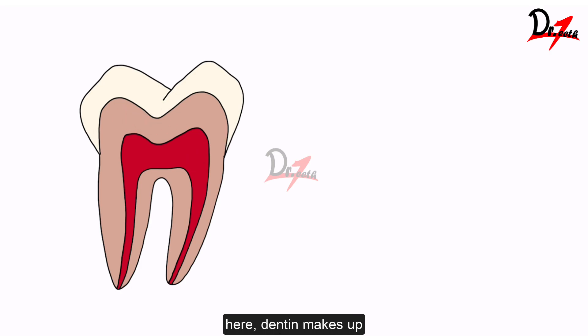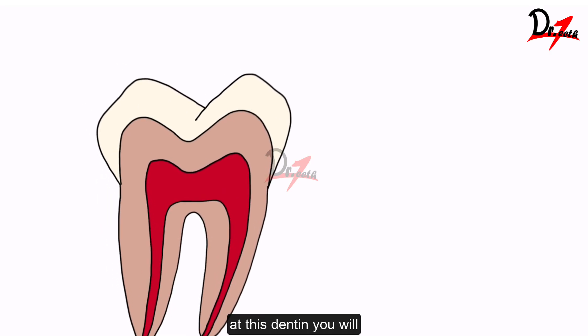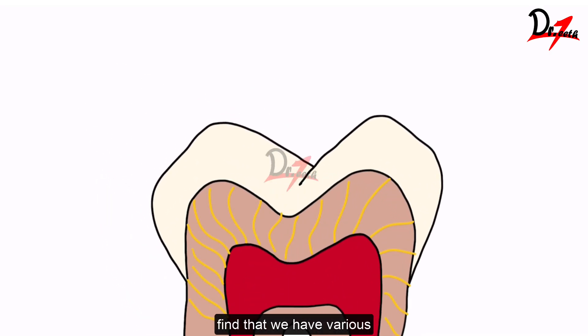As you can see here, dentine makes up the bulk of the tooth and if you look closely at this dentine, you will find that we have various tubules in the dentine. These are the dentinal tubules and it is present all throughout the dentine.